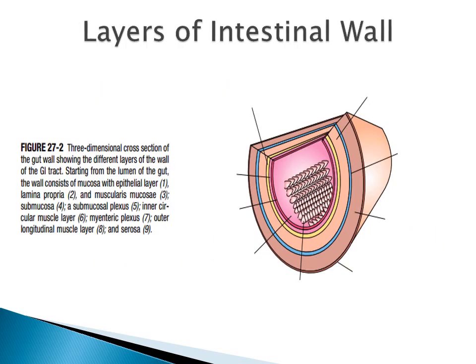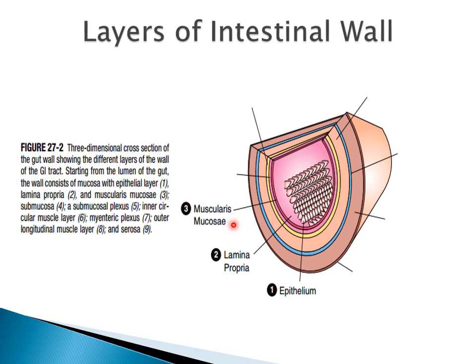If we look at the different layers of the intestinal wall in a three-dimensional cross section, we will come to know that the innermost layer, which is towards the lumen, is the epithelium. This epithelium rests on a layer of connective tissue called the lamina propria. After this, we have the muscularis mucosa, which is a muscular layer attached to the mucosa of the intestine.